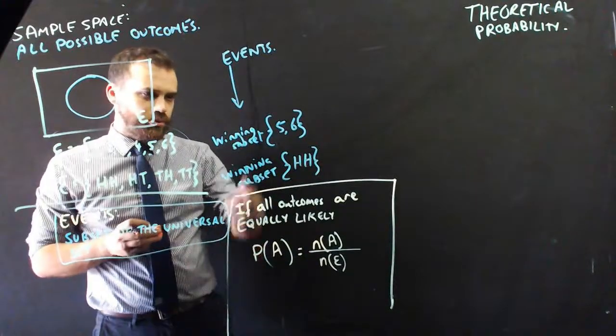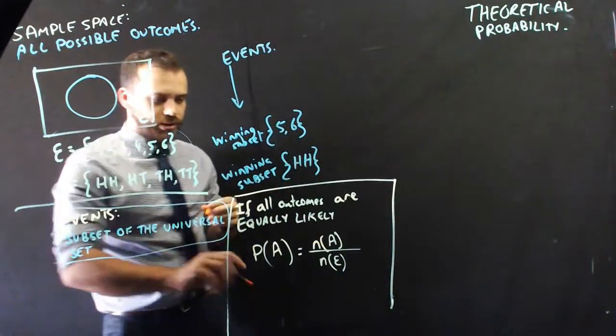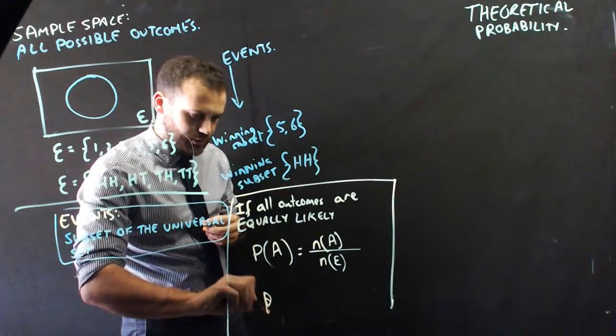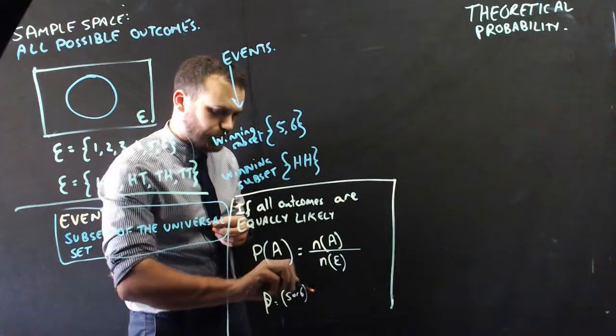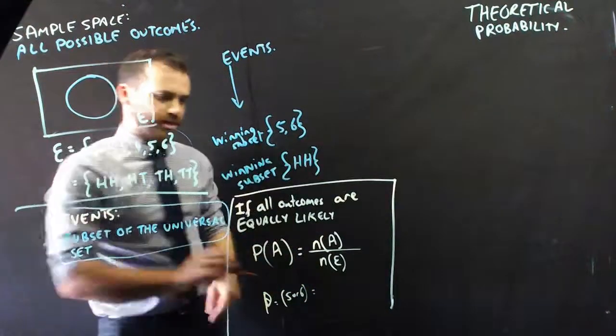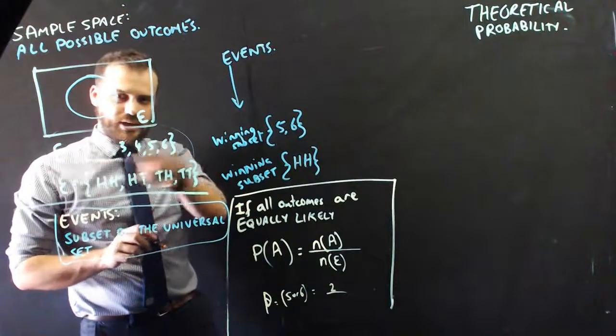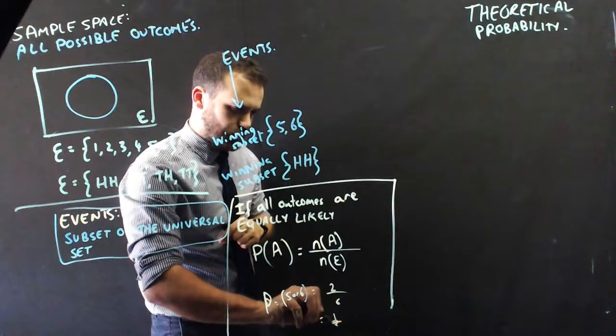So, for instance, the probability of winning this dice game, the probability of getting a 5 or a 6, is equal to the size of that sample space, 2, over the size of the universal set, 6. In other words, 1 over 3.